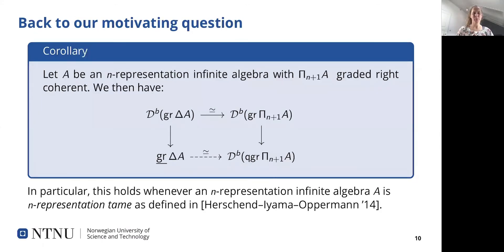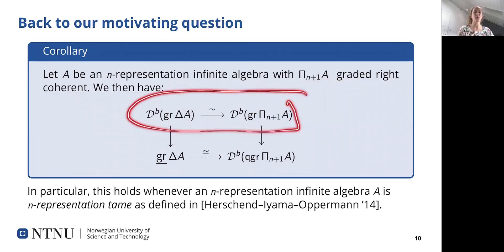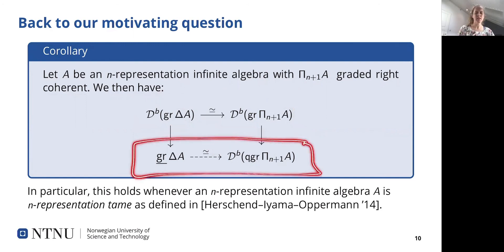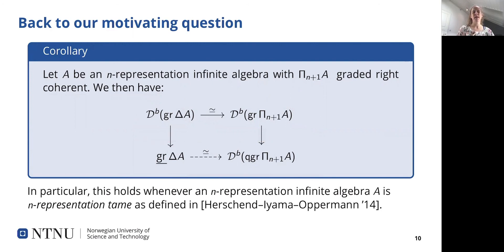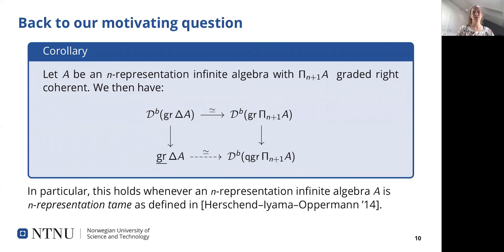We can now return to our motivating question. We showed that if you start with an n-representation infinite algebra A, then the trivial extension is an example of an n-plus-one Cazool algebra with respect to the degree zero part. We also show that the dual in this case is given by the higher pre-projective algebra. So as long as the finiteness condition is satisfied, higher Cazool duality yields this equivalence, and it also descends to give an equivalence on the stable graded level. We started by knowing these two categories are equivalent, but now we have a new understanding of why — it is a consequence of a new derived equivalence that was not known before, providing a full answer to our motivating question.